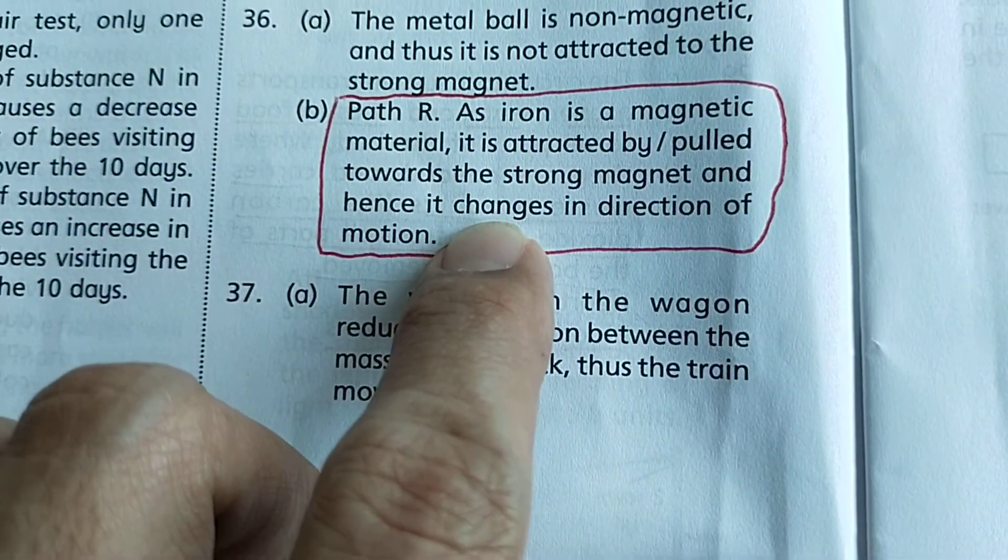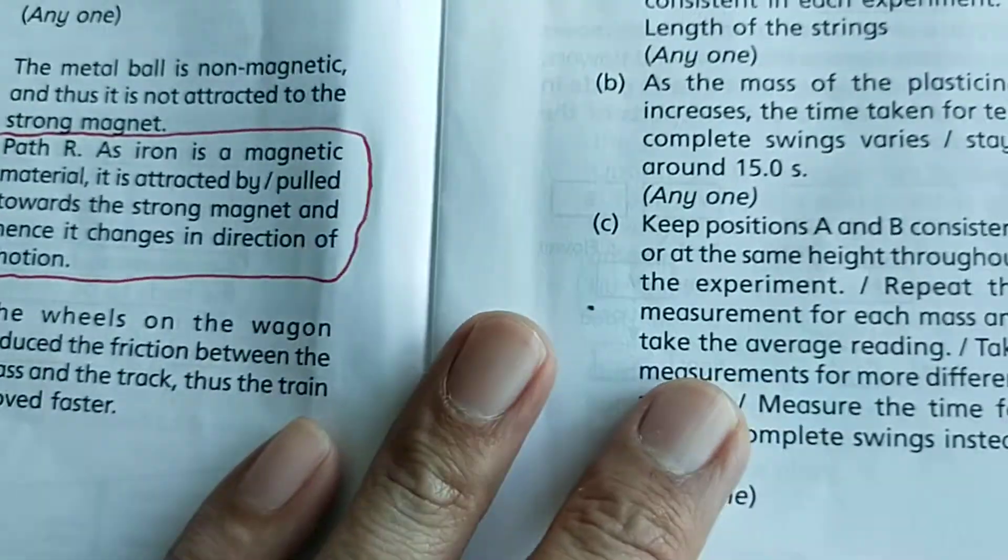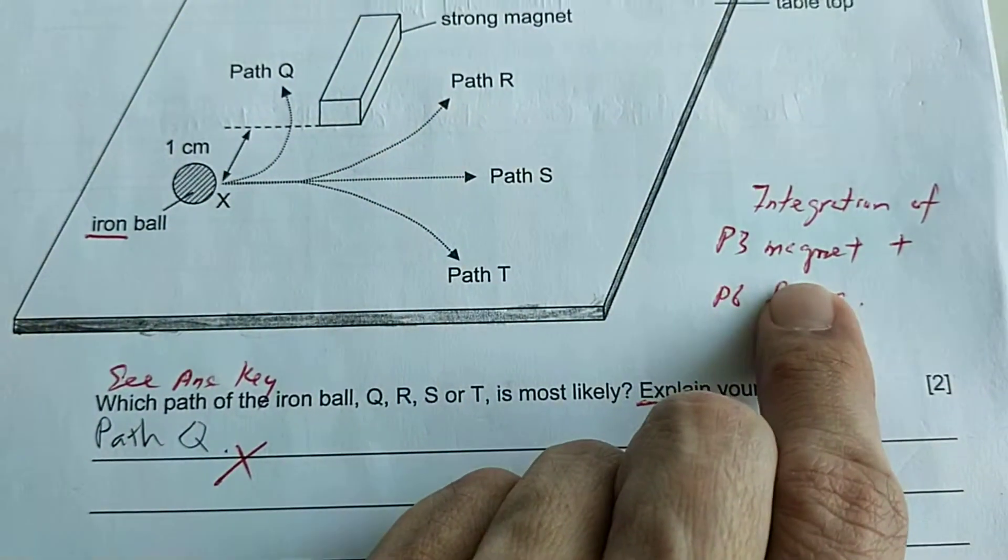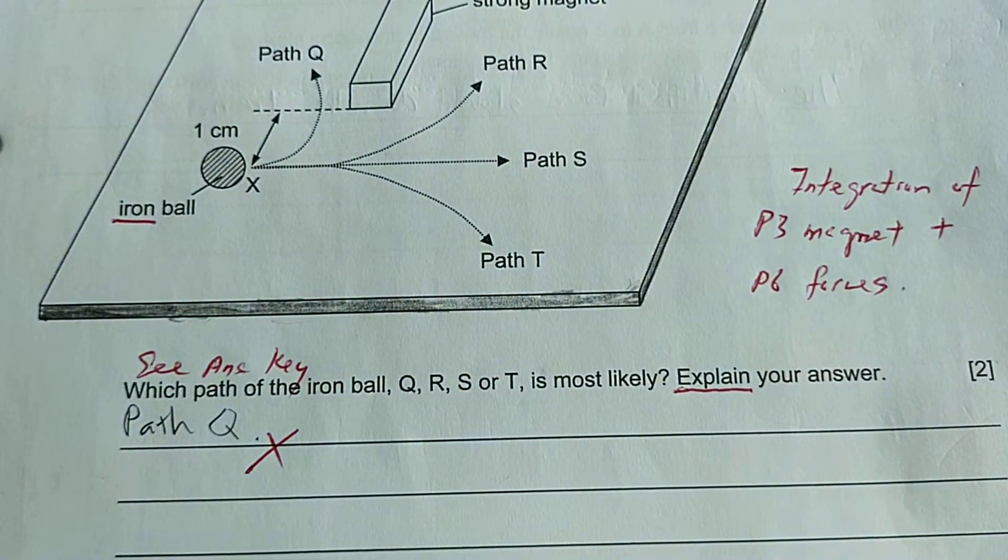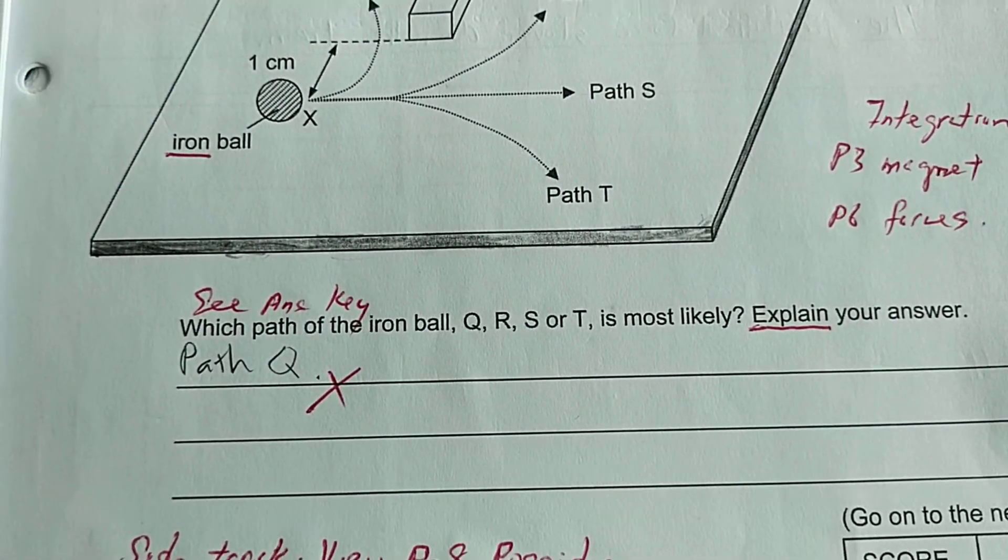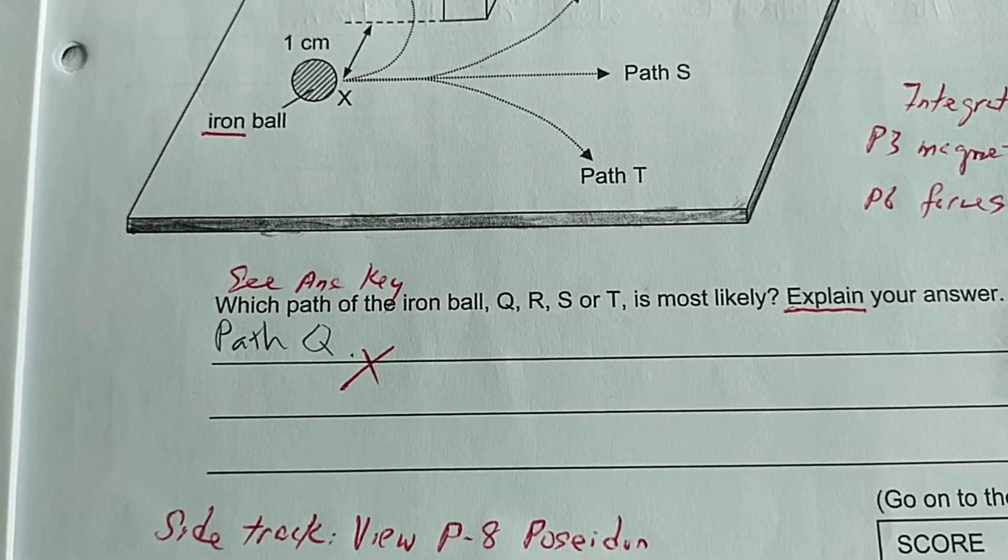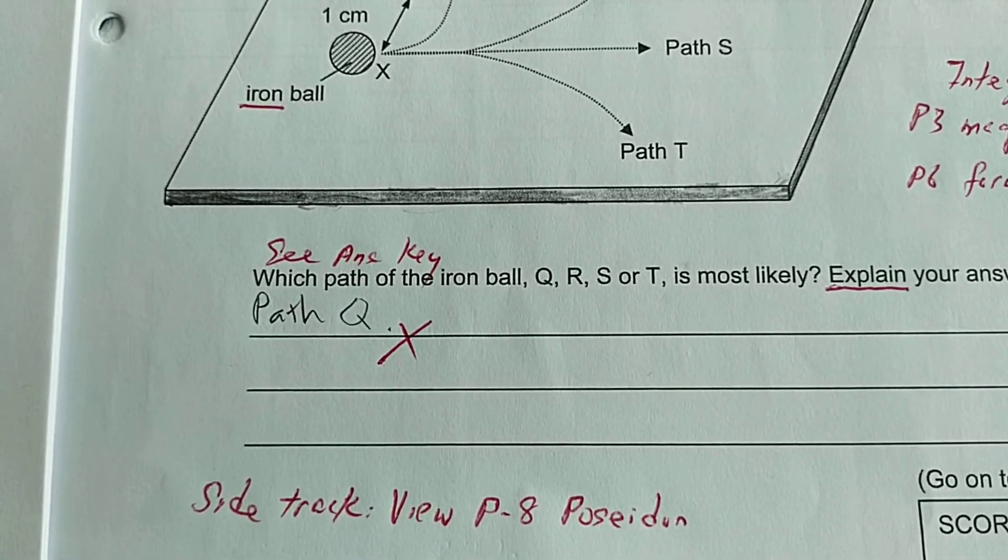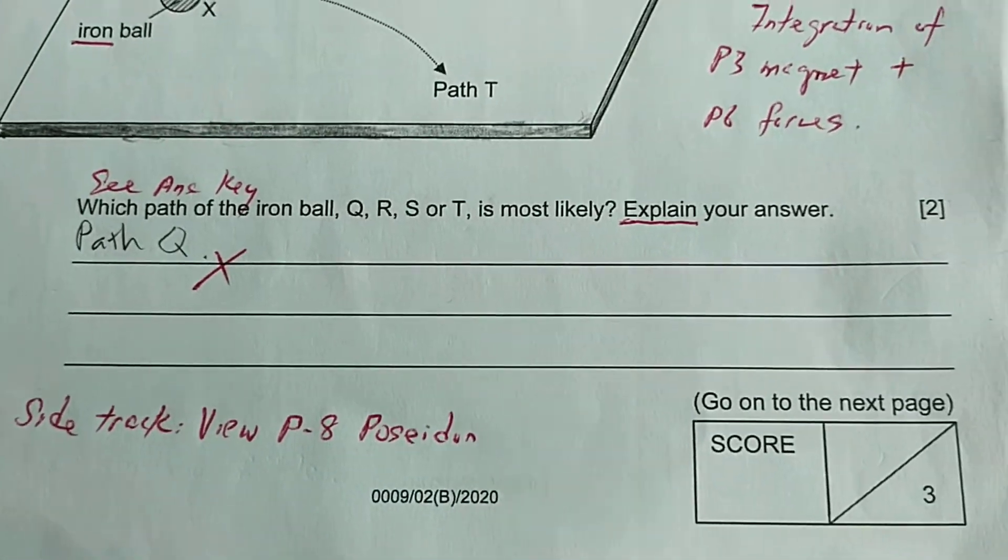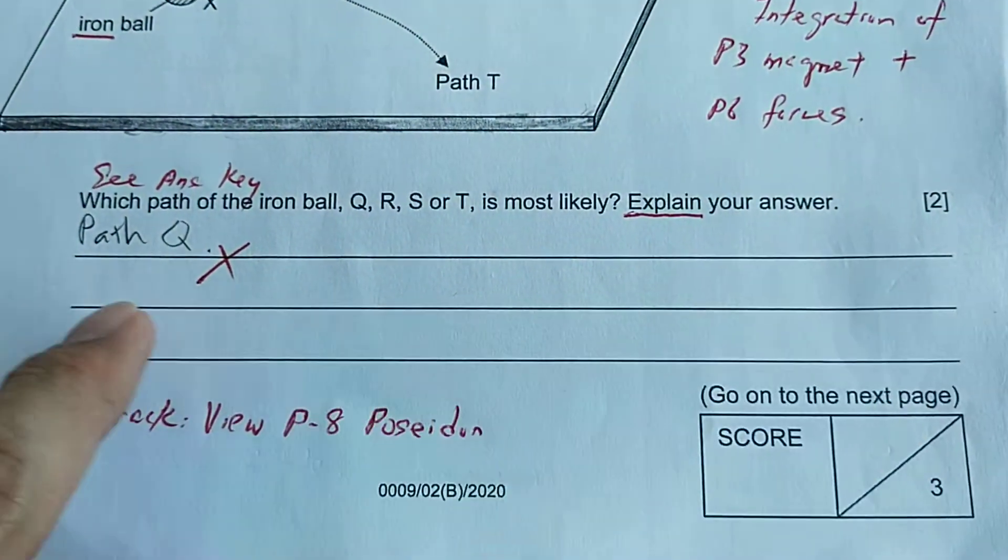And hence it changes in the direction of motion. So the student needs to apply - because in P6 topic on forces they are supposed to indicate that when there's an external force acting on existing force there are six effects. So one of them is the object will change direction. Once again this is a two mark question. The student needs to identify the path and explain.